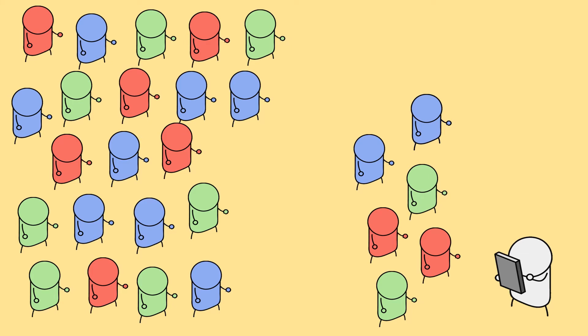When conducting sampling, we need to make sure that the sample selected is representative of the wider group. Essentially, the small group we are studying should reflect the proportions and makeup of the larger group. This is what we call a representative sample.